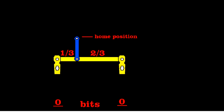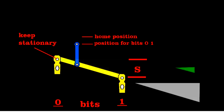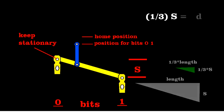To encode bits zero-one, you keep this pivot fixed and pull this tab with a stroke of length s. You move the blue bar a distance of one-third s. You can determine that using similar triangles. We'll call the distance the blue bar moved D. That's position one.